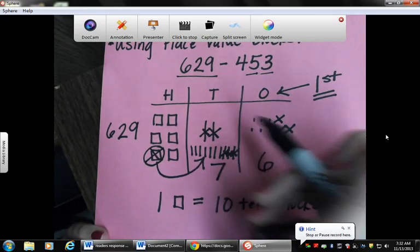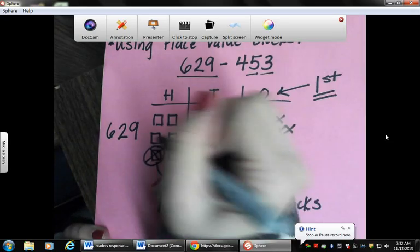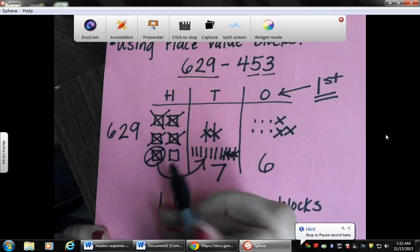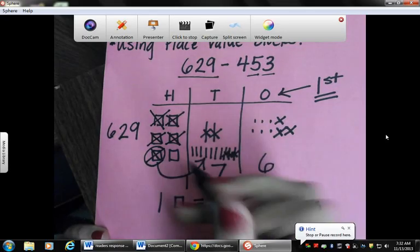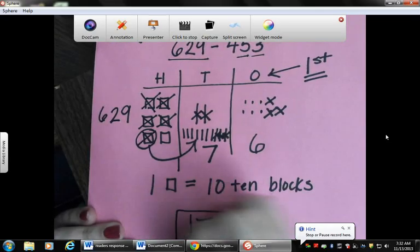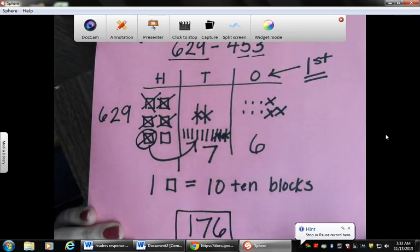Then we need to look at our hundreds. Lastly, we need to take away four. One, two, three, four. And we are left with one in the hundreds place. So our answer, the difference to the subtraction problem, is 176.